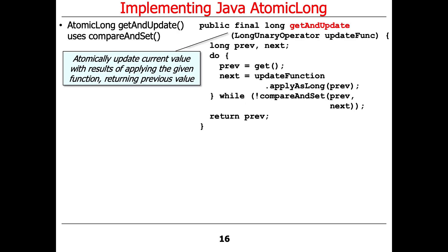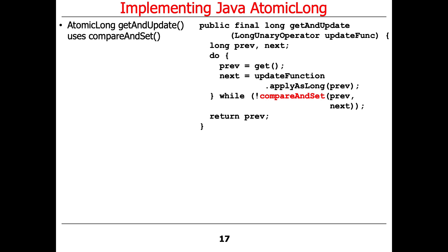There's also another cool method called getAndUpdate, which atomically updates the current value with the results of applying a given function and returns the original value. It uses the compareAndSet operation. It reads the original value into prev, applies an update function to it to create a new value, then does a compareAndSet to switch from the original value to the new value only if it still equals prev. Because of potential race conditions, compareAndSet is needed to make this work atomically.